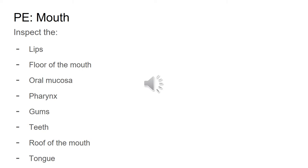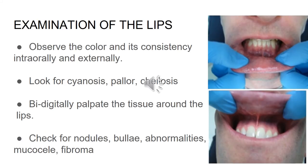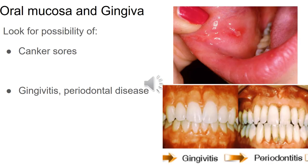For the tongue, ask the patient to stick out their tongue and inspect for abnormalities. For the examination of the lips, observe the color and consistency intra-orally and externally. Look for cyanosis, pallor, and cheilosis. Bidigitally palpate the tissue around the lips and check for nodules, abnormalities, mucocele, or fibroma. Observe the oral mucosa and gingiva, and look for canker sores — small shallow lesions that develop on the soft tissue in the mouth — or gingivitis and periodontal diseases, which occur due to a film of plaque or bacteria accumulating on the teeth.